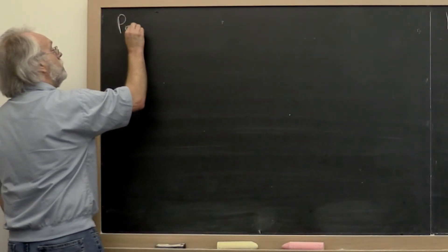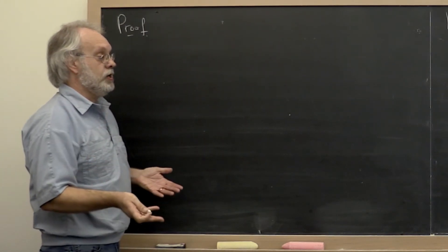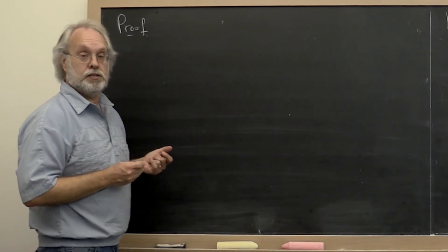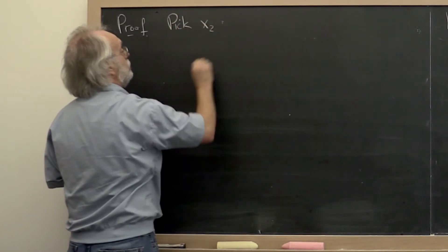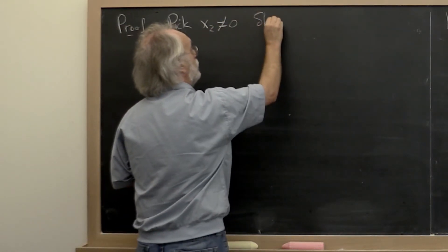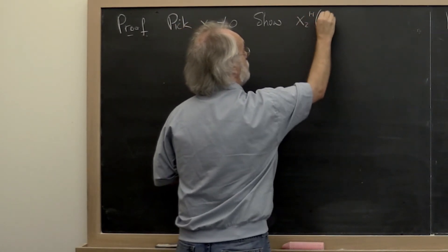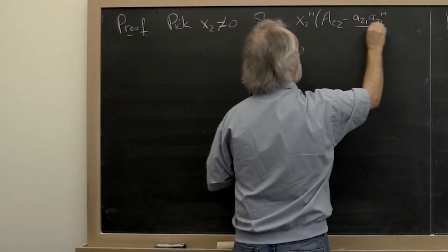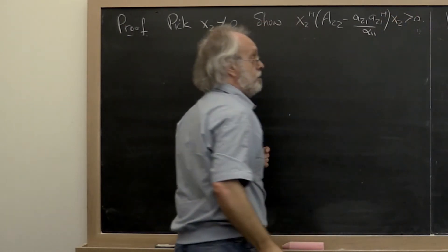So here goes the proof. To show that a matrix is Hermitian positive definite, we need to show that if you hit it on the left and right with a non-zero vector, then the result is always greater than zero. So pick x2 that's not a zero vector. We need to show that x2 Hermitian transpose times A 2 2 minus A 2 1 Hermitian transpose over alpha 1 1 times x2 is greater than zero.